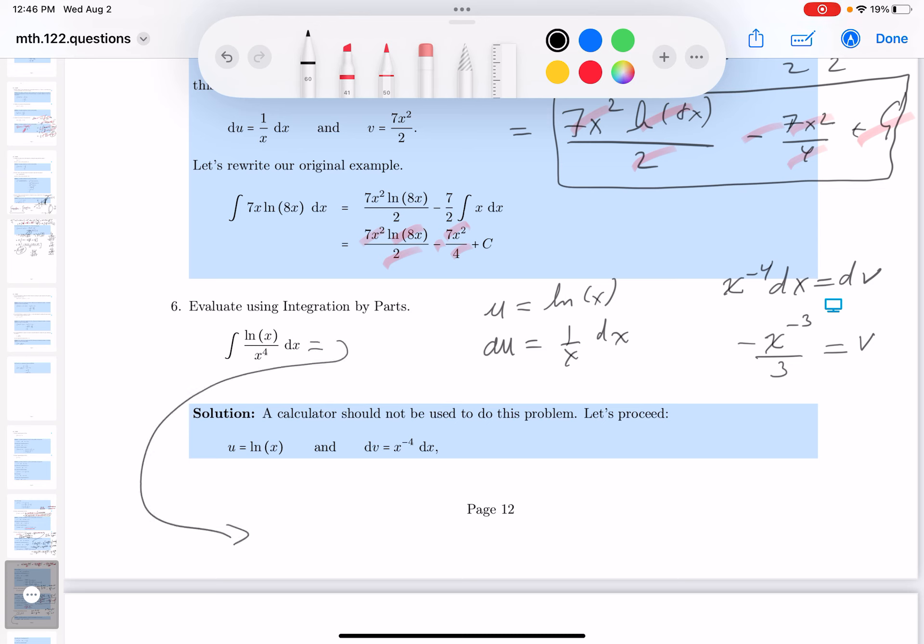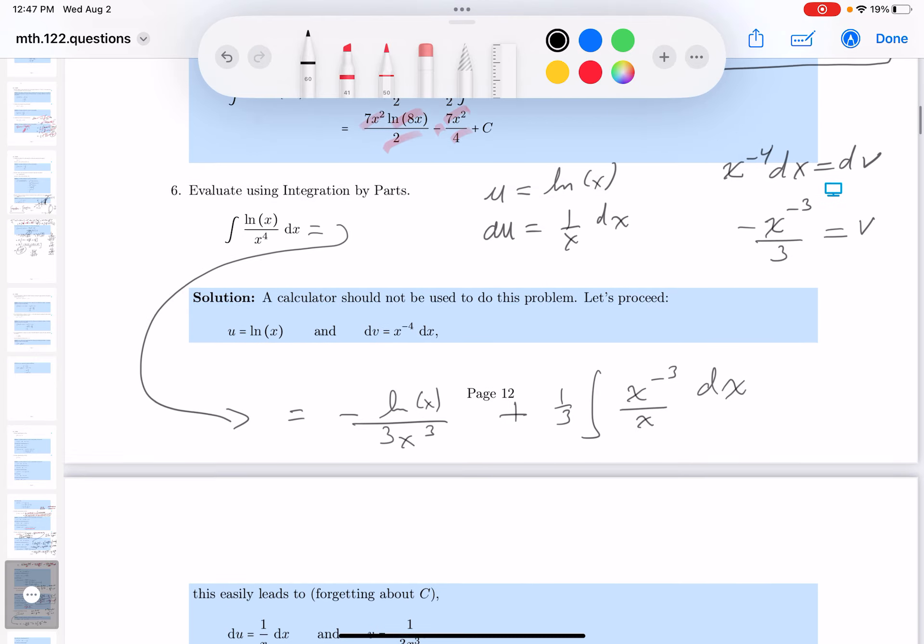So I put down equals u v, so that's going to be minus the natural log of x over 3 x cubed, minus an integration the v du. So I'm going to say plus one-third x to the minus 3, and then the du is going to be 1 over x dx. Well, it doesn't look that bad. Let's keep going.